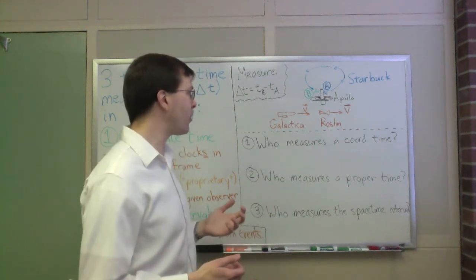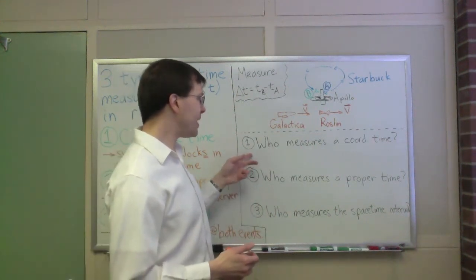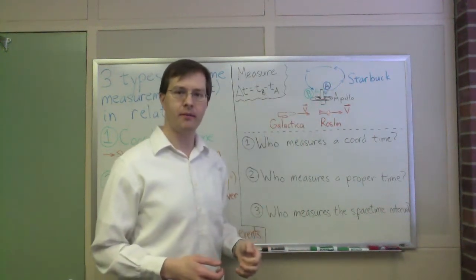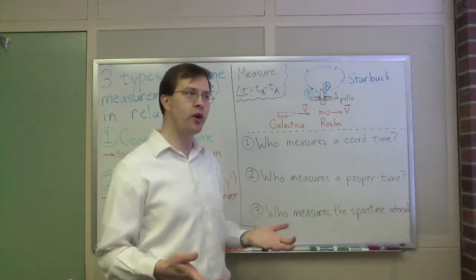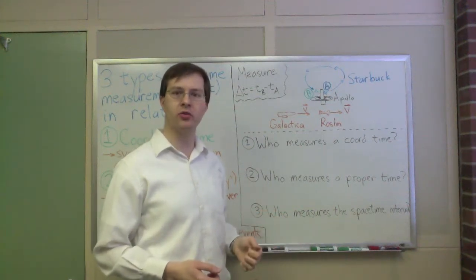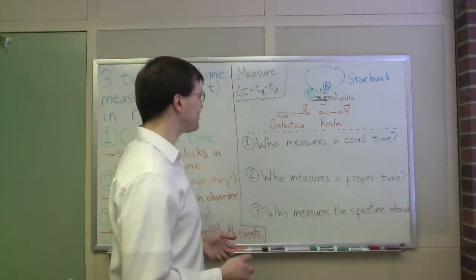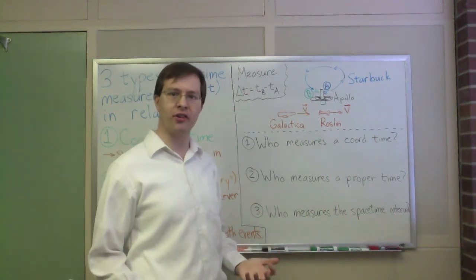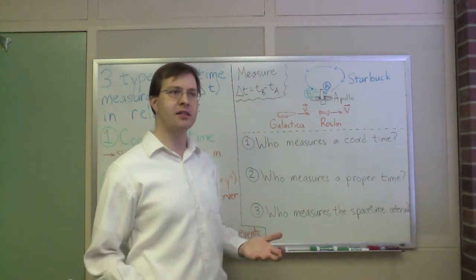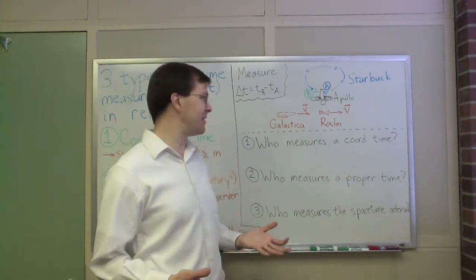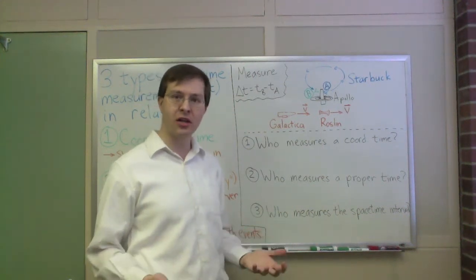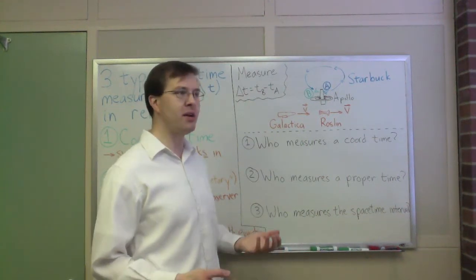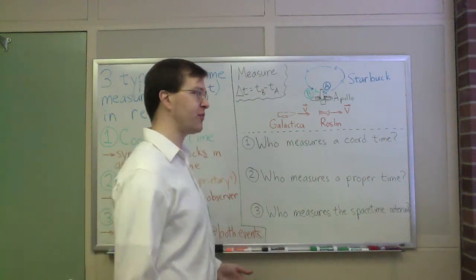I want to talk about who in this system measures a coordinate time between event A and event B. They may be different coordinate times, but who in here can measure coordinate time between those two things? Think about it for a second. Coordinate time is always measured in a single inertial reference frame. Measured by someone who is, from their own perspective, sitting still, or someone who's moving at constant velocity who experiences no acceleration, but it may be a team effort between multiple clocks in the same reference frame.